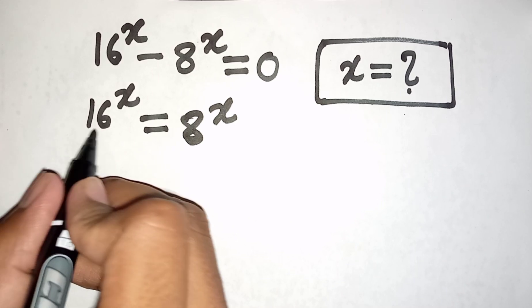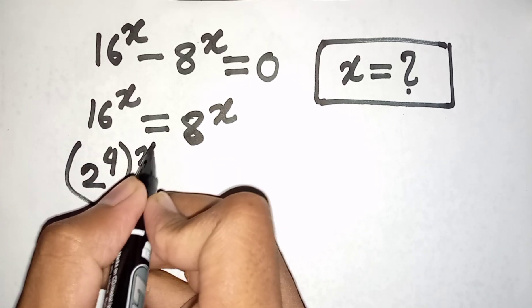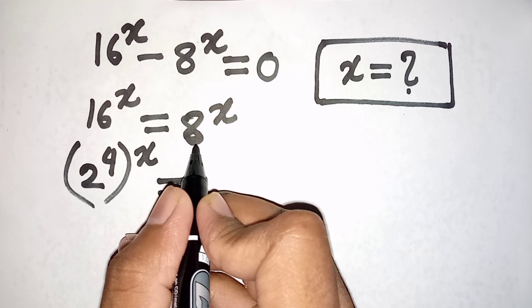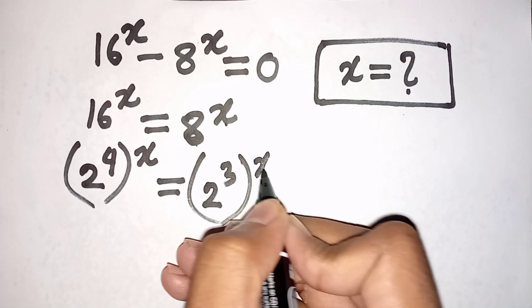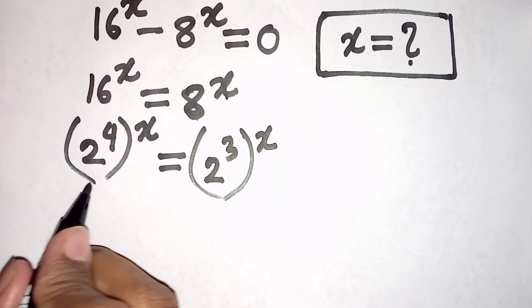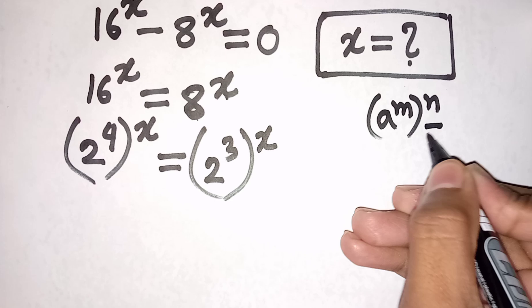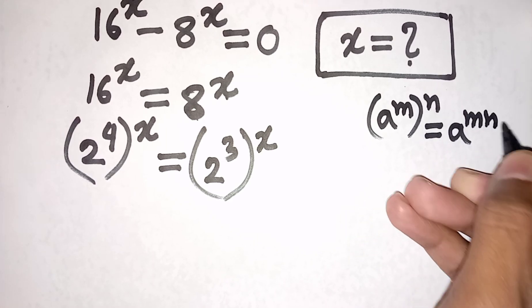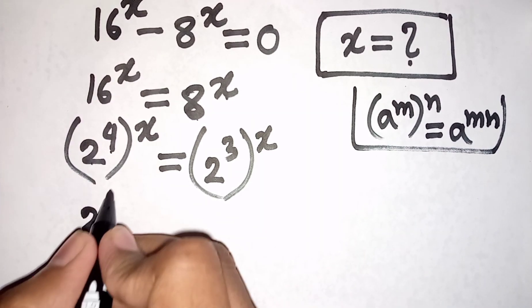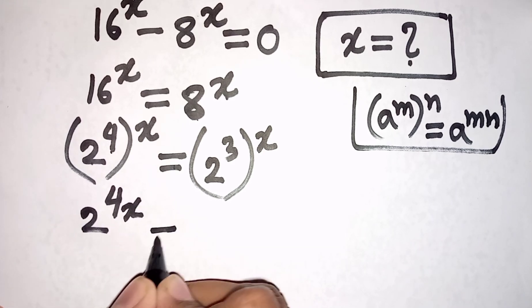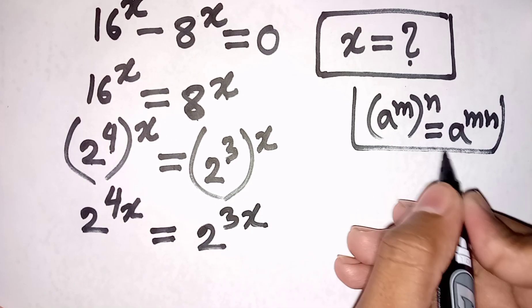Now we can write here 16 is same as 2 power 4, then bracket power x, is equal to 8 is same as 2 power 3, then bracket power x. Now here we can apply the formula: a power m, bracket power n, is equal to a power mn. So according to this formula we can write 2 power 4 times x — it will be 4x — is equal to 2 power 3 times x — it will be 3x.